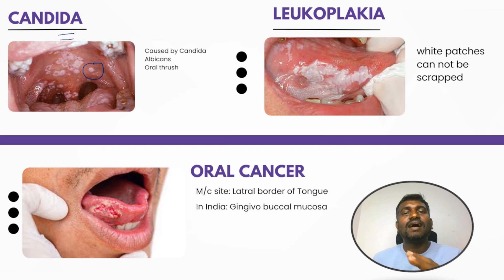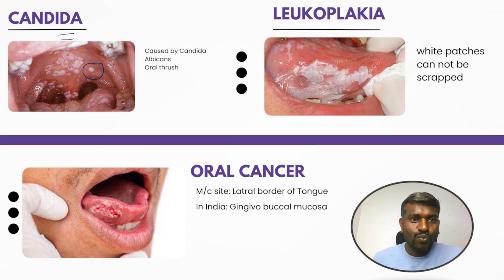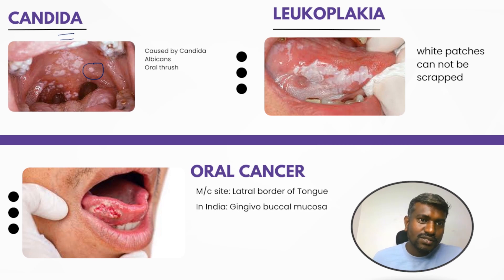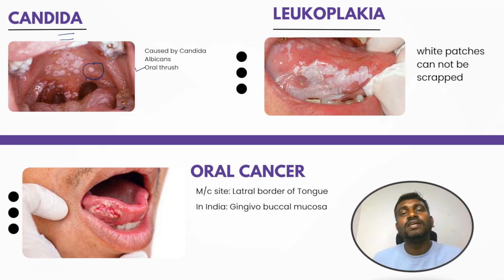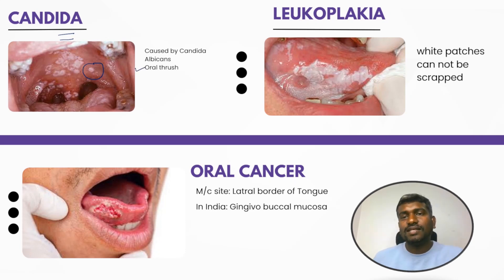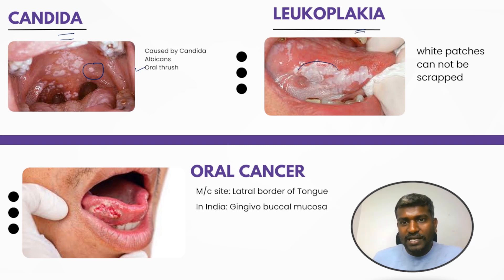This is candida — it is caused by Candida albicans. The patient is going to have white patches and is also going to have oral thrush. Remember: these white patches can be removed, whereas in leukoplakia the thickened white patches cannot be scraped off. Very important to remember.